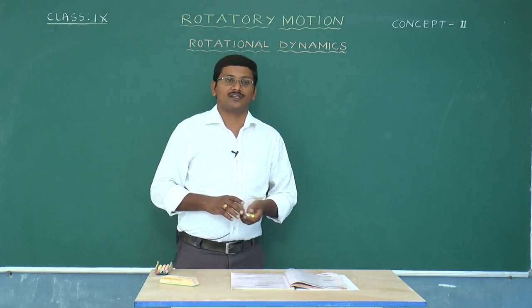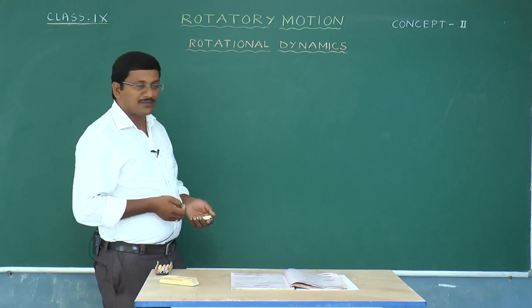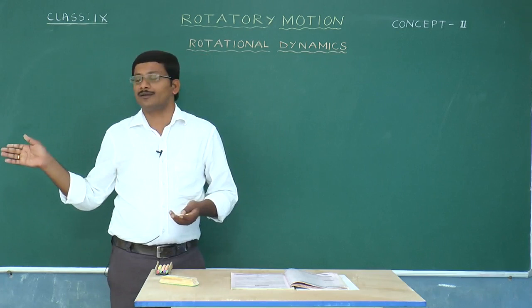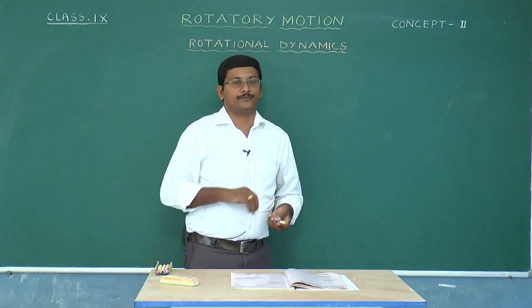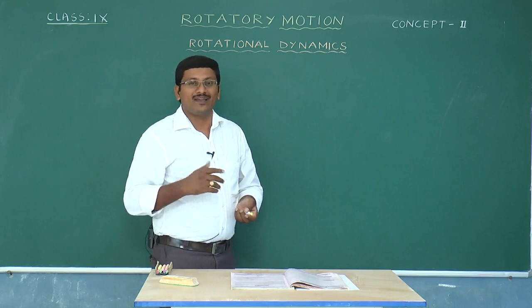Just as we studied dynamics regarding force after linear kinematics, in the same manner we will discuss rotational dynamics. Before going to that, let us have some introduction. When we try to close the door, we always try to apply force at the door knob, which is just away from the hinges. But when we apply the force close to the hinges, it will be difficult — we cannot close the door as comfortably as when applying force at the door knob. Why does this happen?